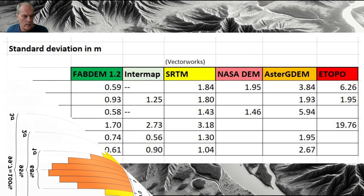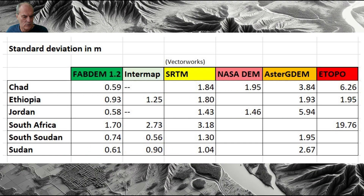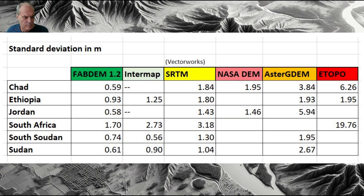Now let's look at the results after the analysis of those 40,000 points. FAB DEM gives the best result — we have a standard deviation that is in most cases below one meter. South Africa has a higher standard deviation, but this appears to be the case in all the digital elevation models and I have no idea why.